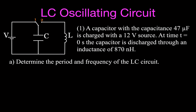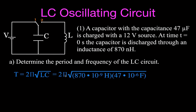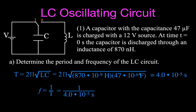Let's start with part one — determining the period and frequency for this LC circuit. The equation for period is T = 2π√(LC), where L is the inductance and C is the capacitance. Plugging in: T = 2π × √(870×10⁻⁹ H × 47×10⁻⁶ F), since nano is 10⁻⁹ and micro is 10⁻⁶. You calculate that and get 4.0×10⁻⁵ seconds for the period. Since frequency and period are inversely proportional, f = 1/T = 1/(4×10⁻⁵), giving a frequency of about 25,000 Hz.